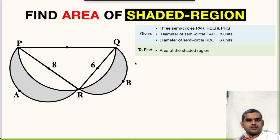Here in the figure shown, we have to find the area of shaded region. Let us see what all things are given. The question says there are three semicircles PAR, then RBQ, and another semicircle PRQ. The diameter of semicircle PAR is 8 units and that of RBQ is 6 units, and we have to find the area of shaded region.